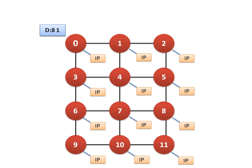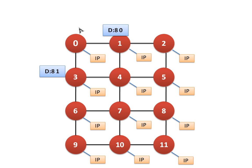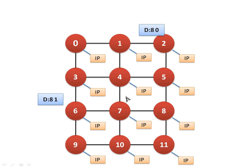So let's assume this node wants to send a data packet to node 8. This node will send two packets. One packet will follow XY routing, which goes: 0 to 1, 1 to 2, 2 to 5, 5 to 8. Another packet will follow YX routing, which goes: 0 to 3, 3 to 6, 6 to 7, 7 to 8.